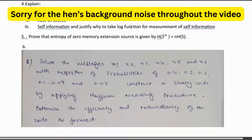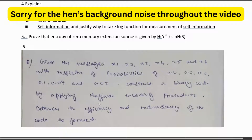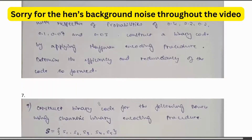For Huffman coding problems: messages x1, x2, x3, x4, x5, x6 are given with probabilities 0.4, 0.2, 0.2, 0.1, 0.07, and 0.03 respectively. You are asked to construct a binary code by applying the Huffman encoding procedure, and also to find the efficiency and redundancy of the code. Study this carefully.